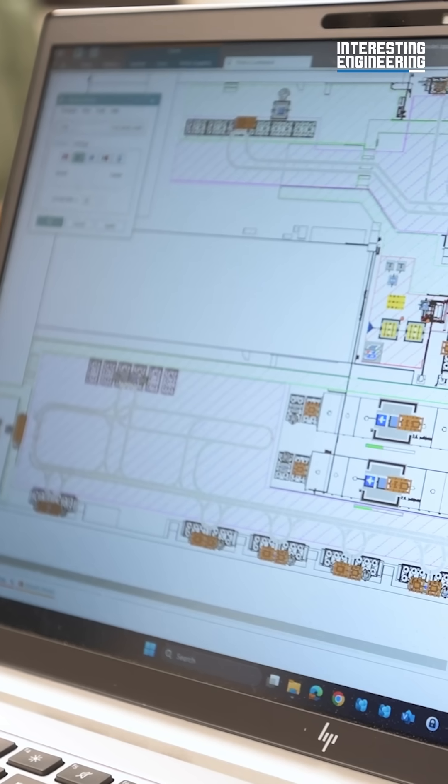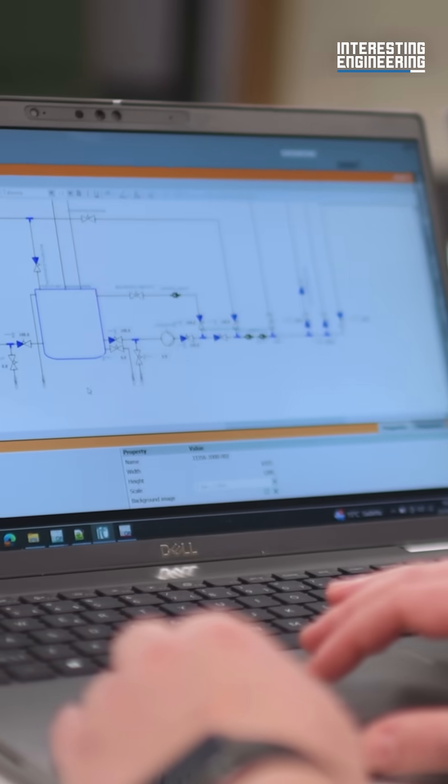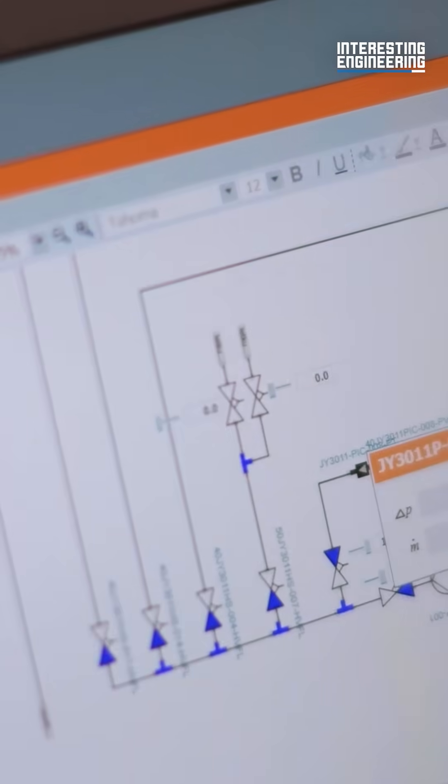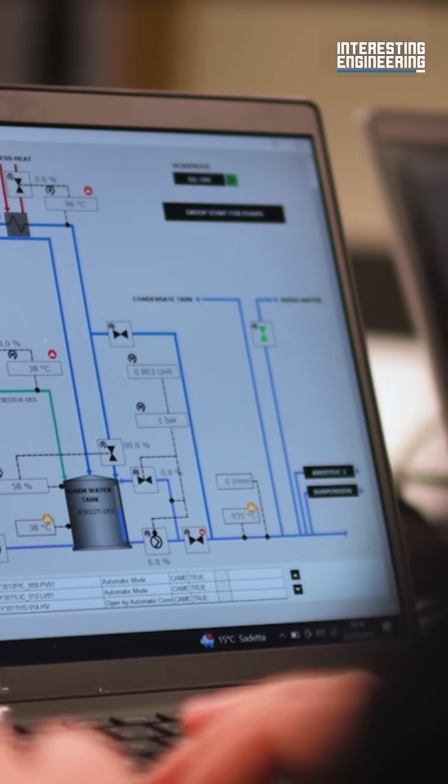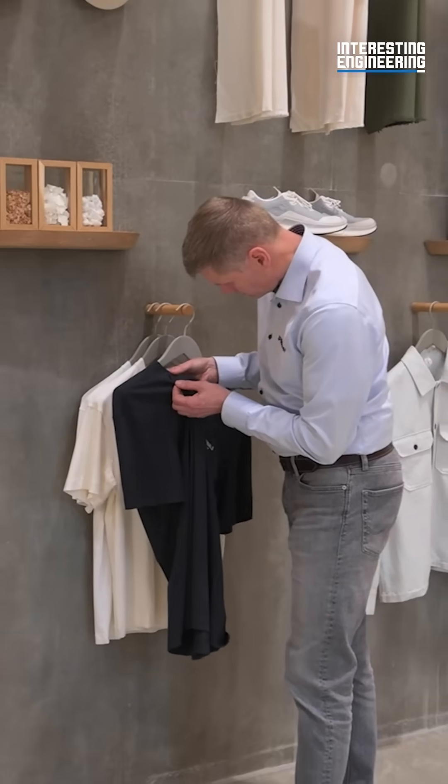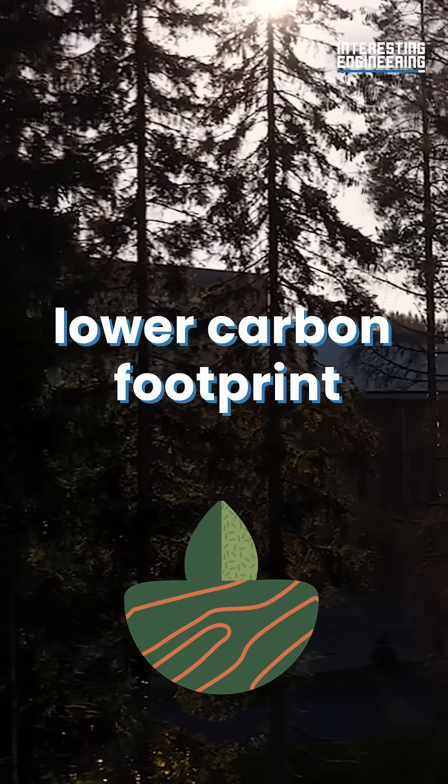Digital twin simulations helped identify and fix design flaws before production started, cutting waste and speeding up time to market. Siemens' smart manufacturing tools continue to optimize every step, ensuring consistent quality and a lower carbon footprint for each fiber spun.